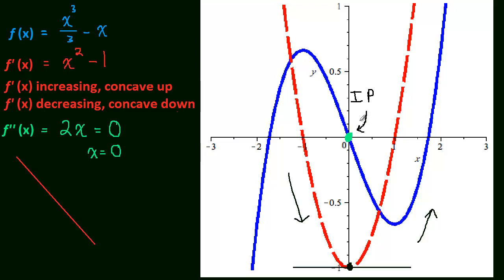This is just more terminology. It's called an inflection point. Where does it happen? When the second derivative is equal to 0. And that's because when the second derivative is equal to 0, that's a critical number of the first derivative.